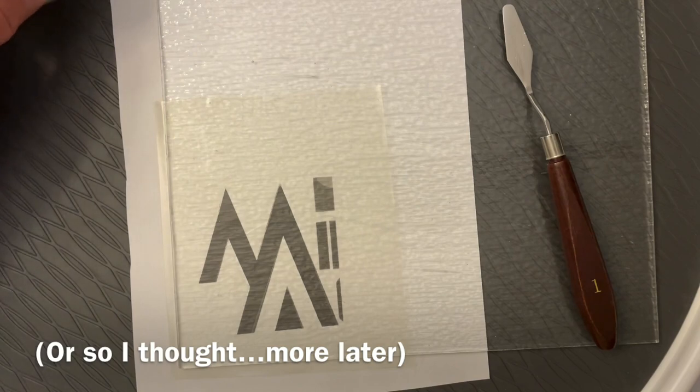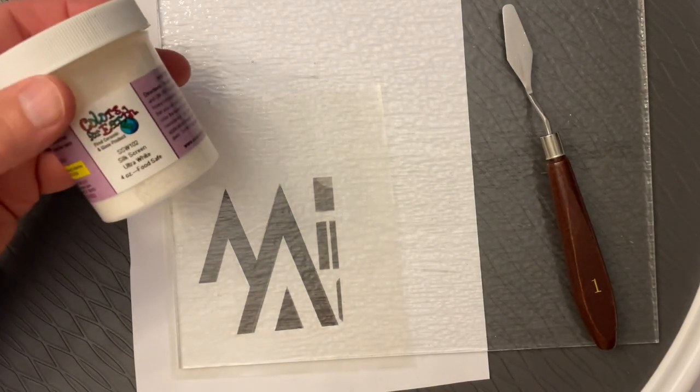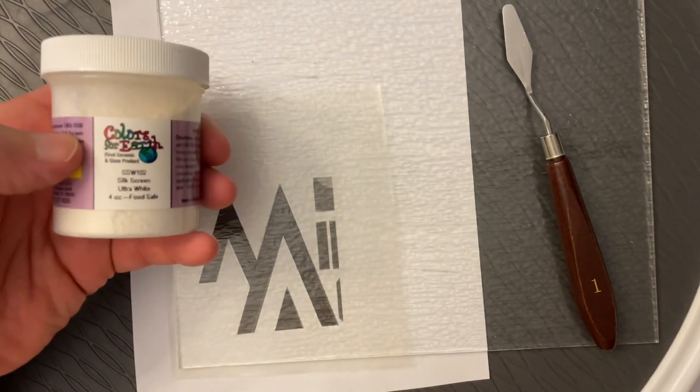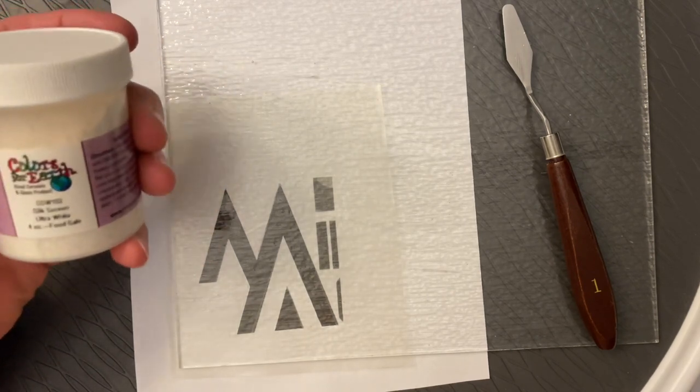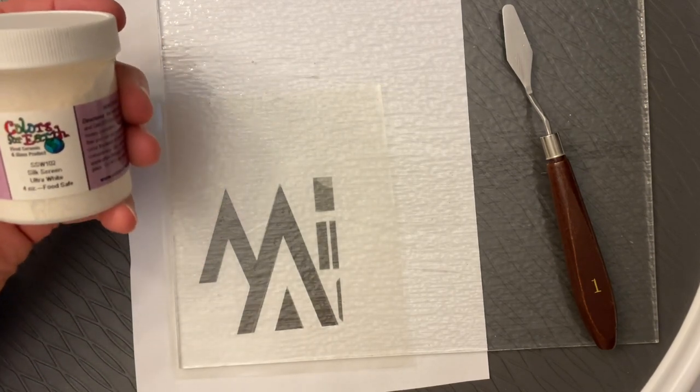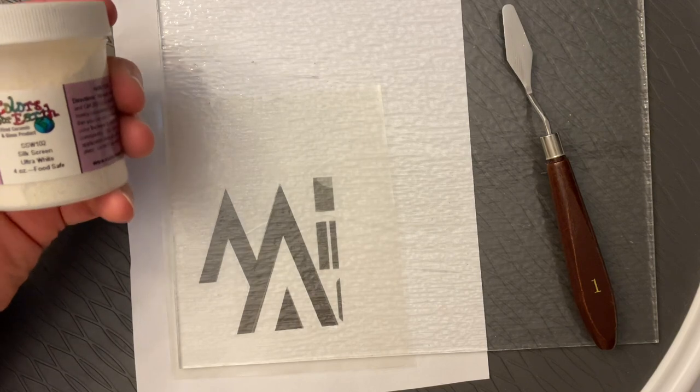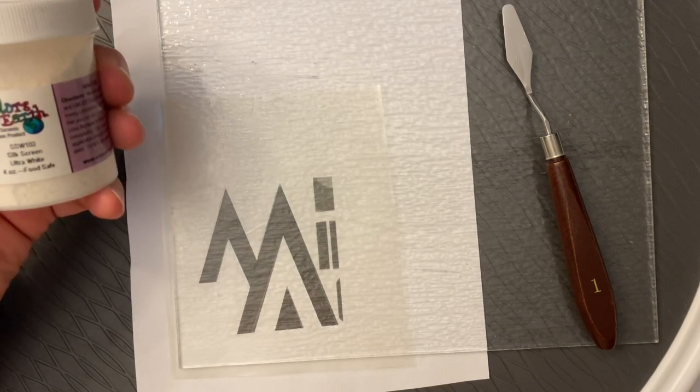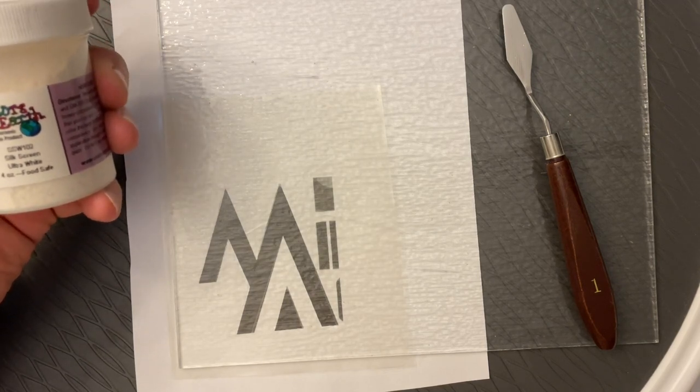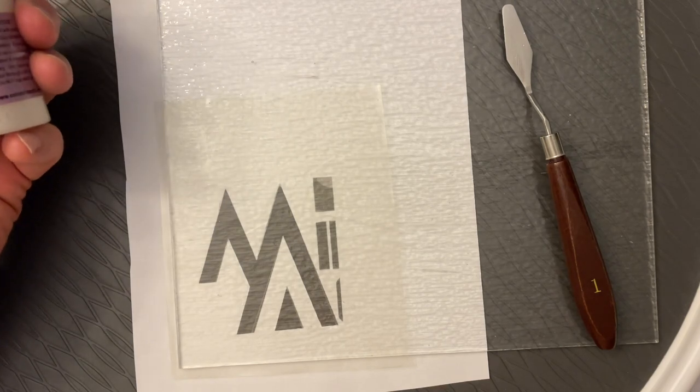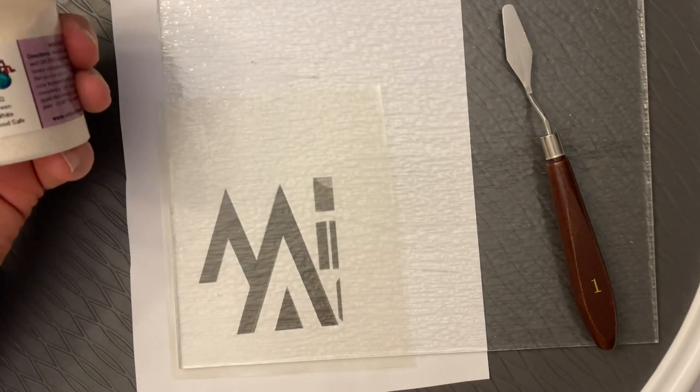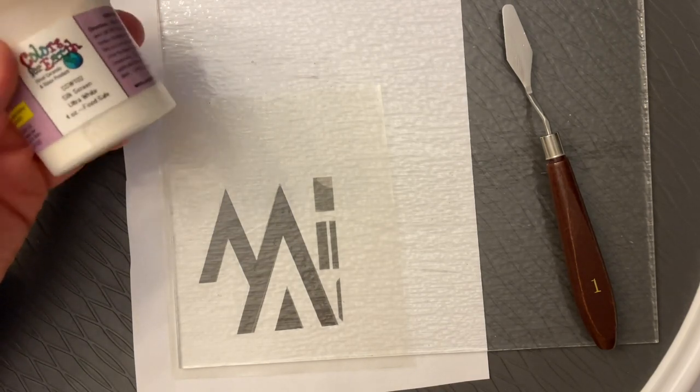I'm going to mix up my silk screen. Paula McCoy is the owner of Colors for Earth, and I'm fortunate to call Paula a friend. She's so sweet to give me tutorials privately. I was able to call her and explain what I was trying to do, and she walked me through how she would approach this project.